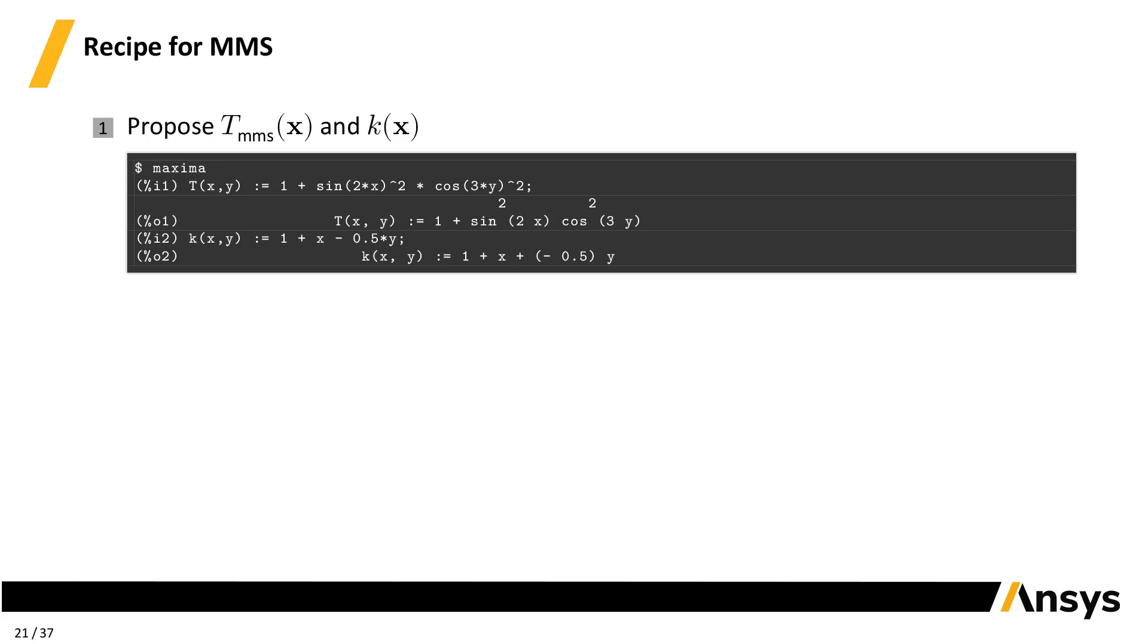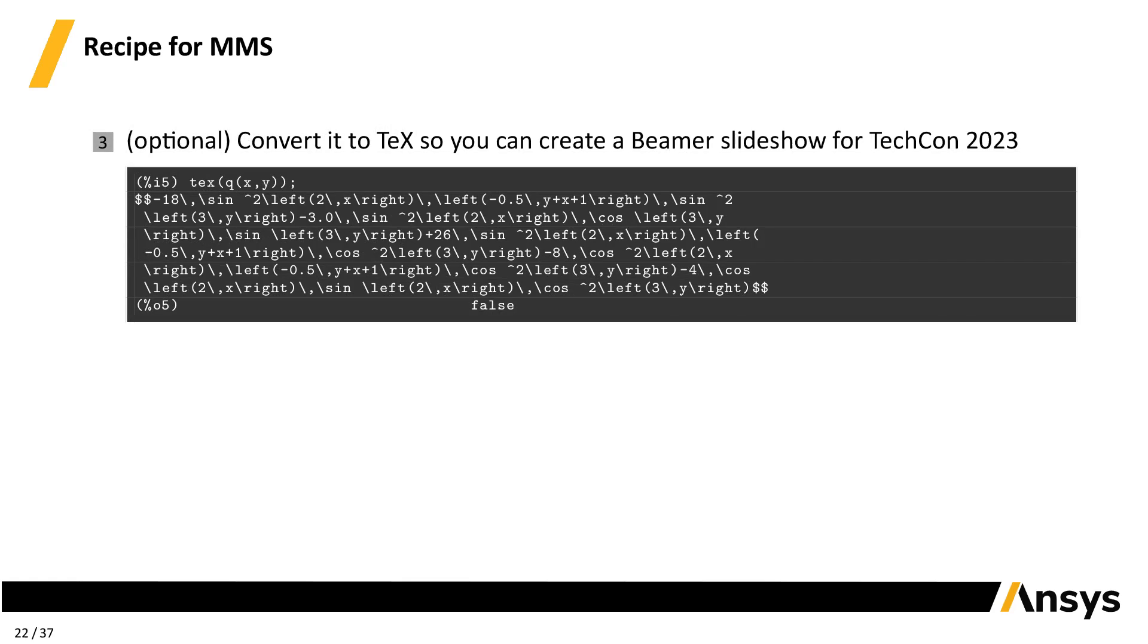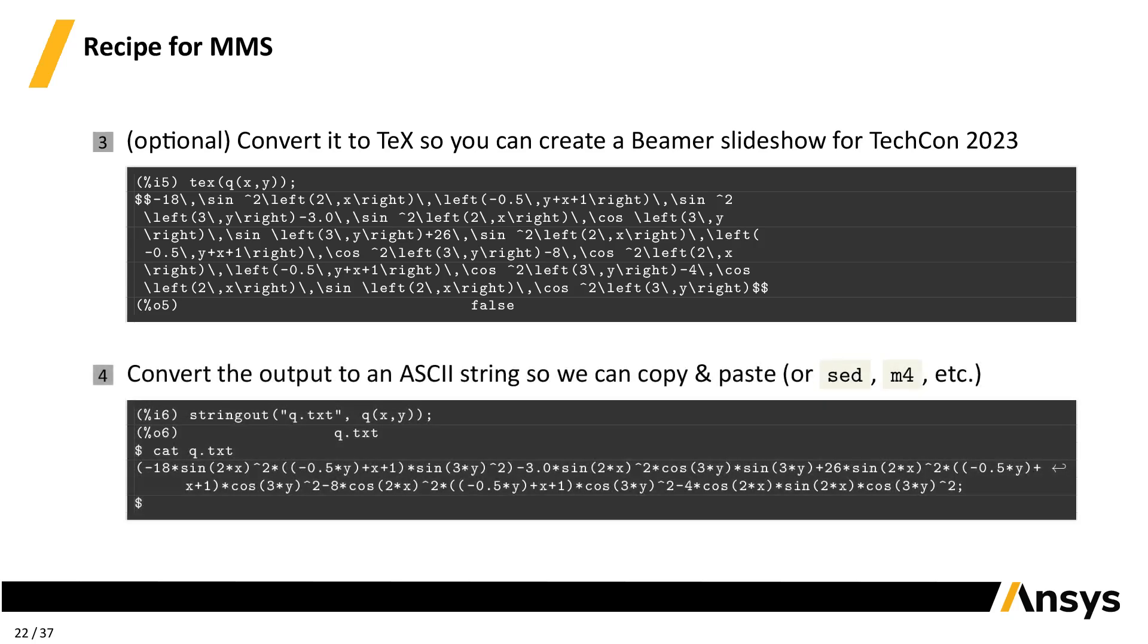Let's rewrite the recipe to validate our code with MMS in 10 steps. 1. Propose a manufactured T and k and write them in Maxima. 2. Compute the source term by applying the differential operator to the expressions above. 3. Optionally, ask Maxima to convert the expression to TeX, just in case you need to create some slides for TechCon. 4. Convert the answer to an ASCII string which we can copy into the solver's input, provided the syntax is the same, of course.